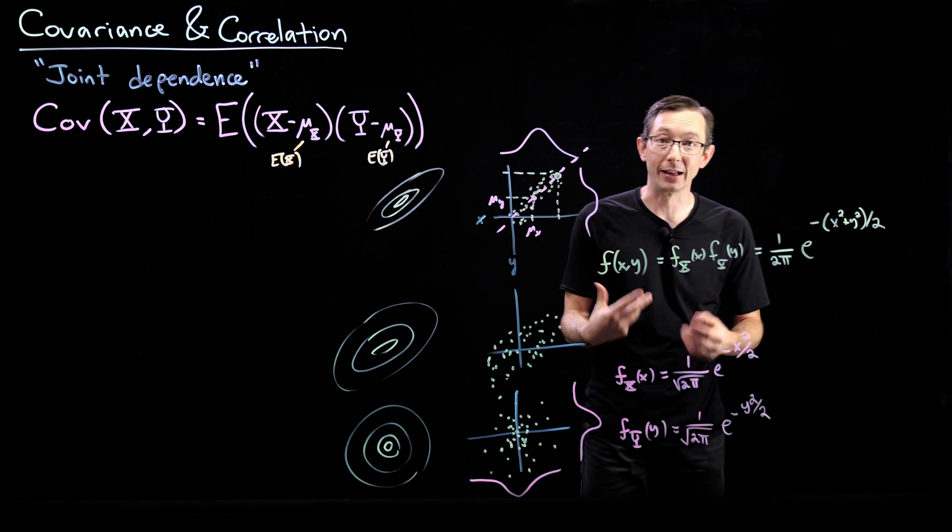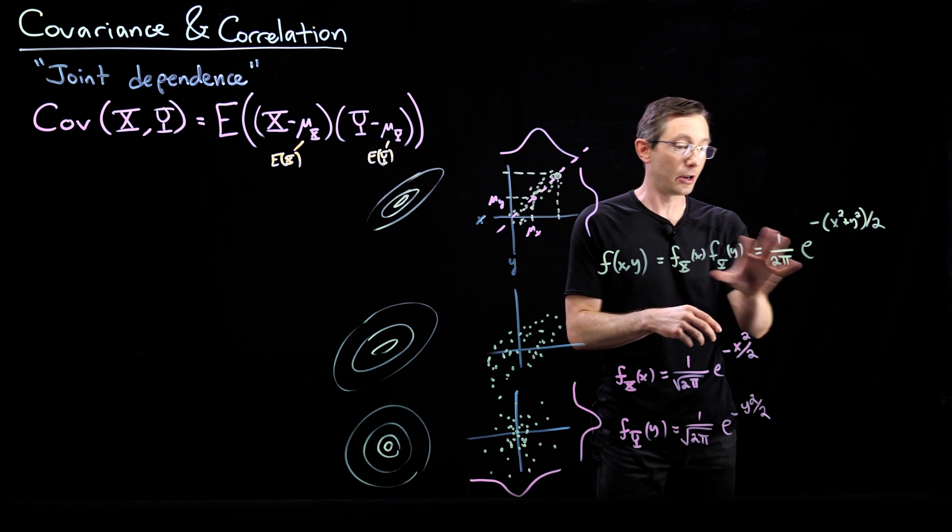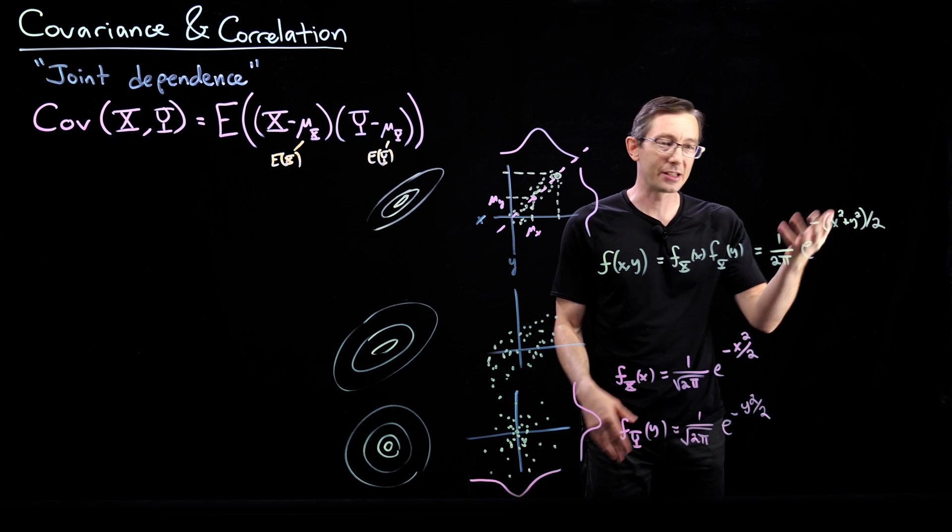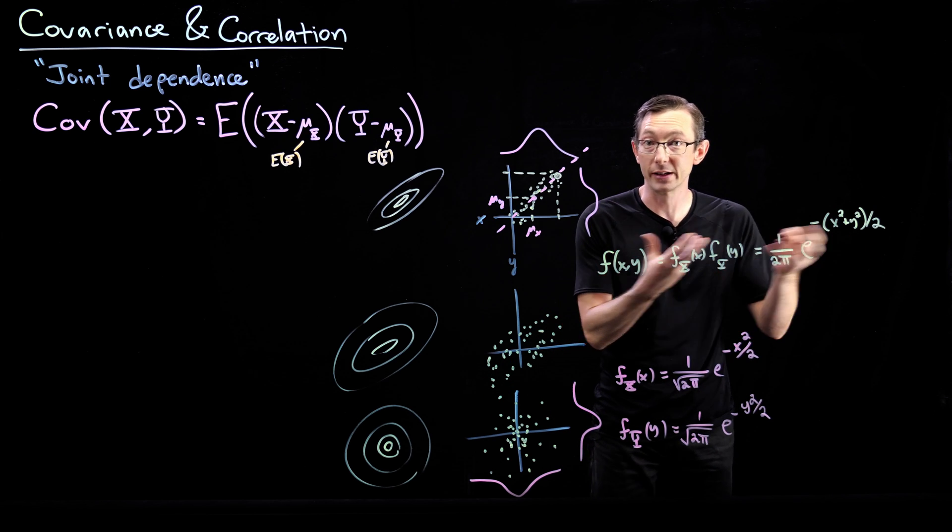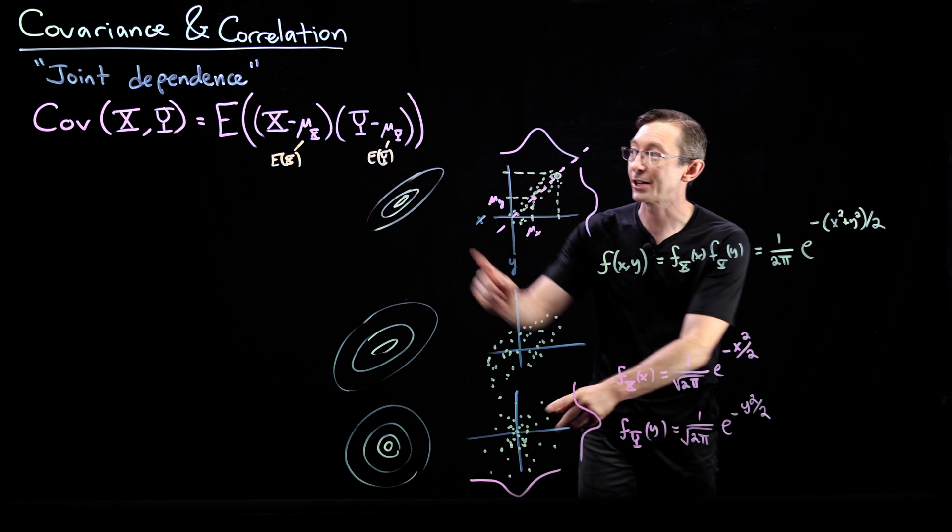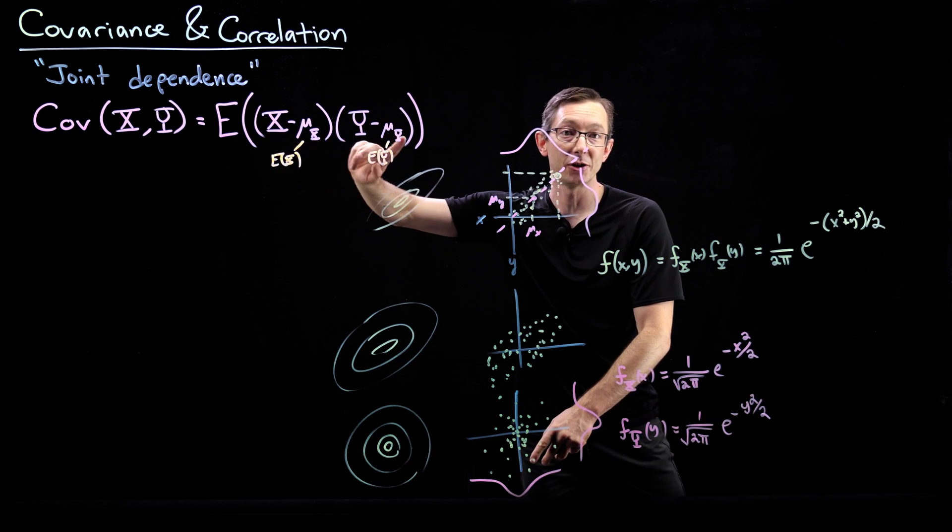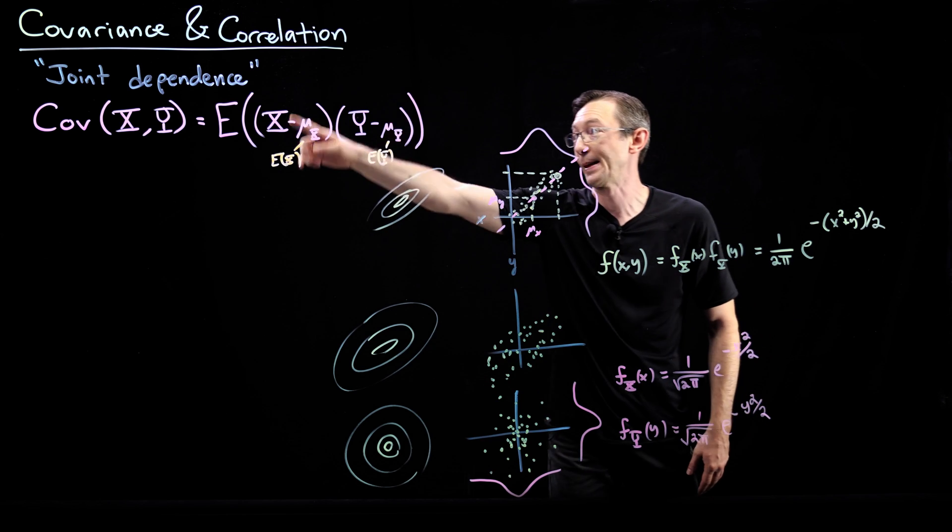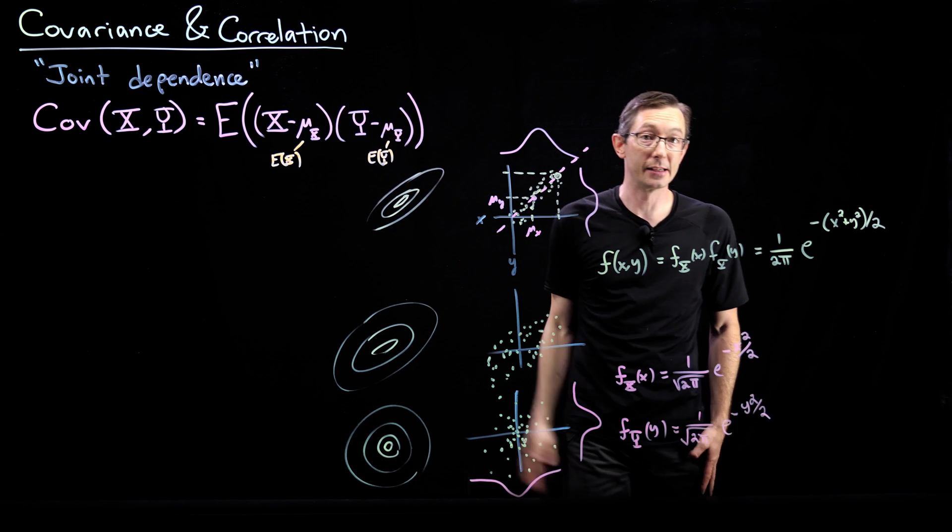So I encourage you to actually simulate this. Throw a random dart according to some Gaussian probability. You can do this with randNs, with a normally distributed random variable in Python. Throw a bunch of random darts and actually compute, add this expectation up using the sum. Actually add up all of those values and show that the sample expectation is very close to zero.